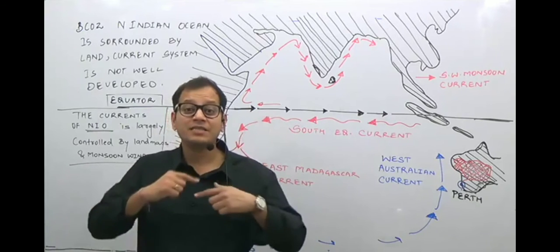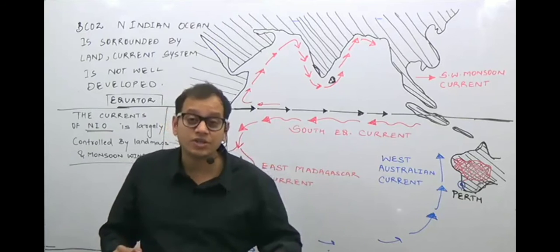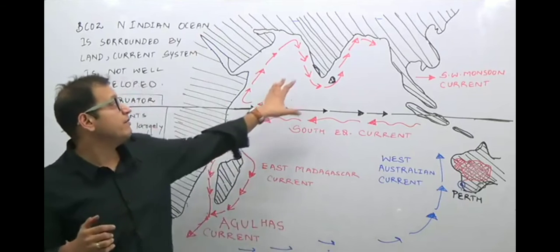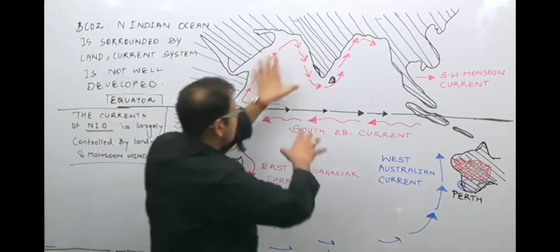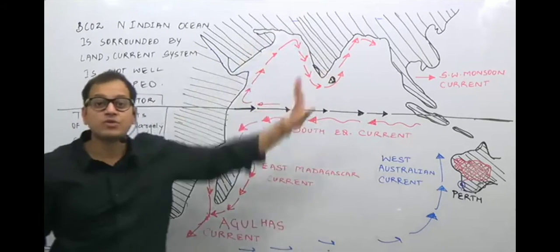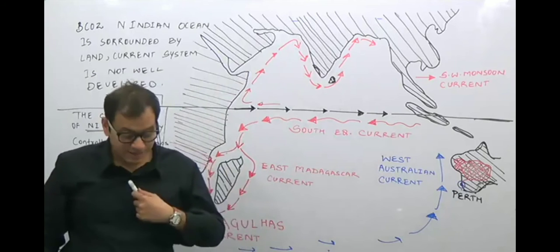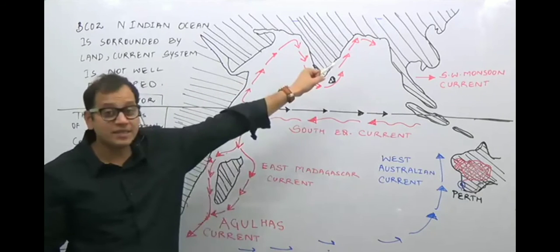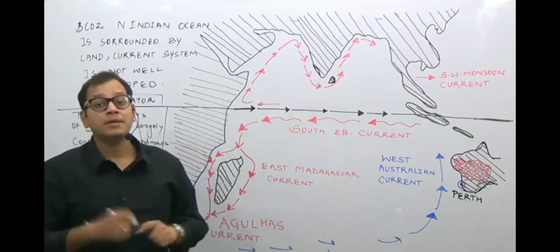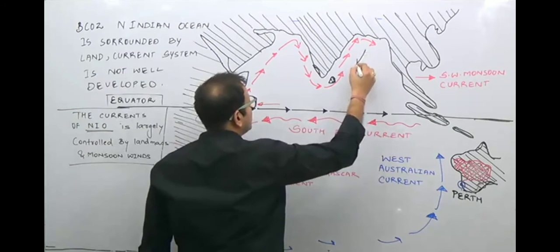Monsoon winds are the kind of winds in which there is a complete U-turn — at least a 180-degree change in direction. We have one wind coming from the Southwest and another from the Northeast, a complete reversal in direction, which is why our climate is known as a monsoon type. The other current, which develops during the winter season, is a warm current known as the Northeast Monsoon Current.